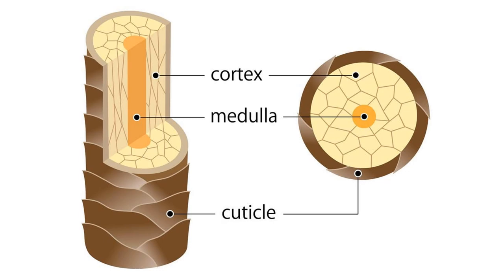This is the cortex. The middle portion seen in yellow is the medulla. The outermost portion with the imbricate or scale-like patterns is the cuticle. On the right side we can see the cross-section area. This is how the hair looks under a microscope.